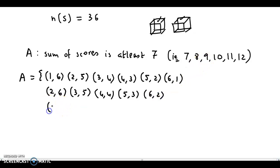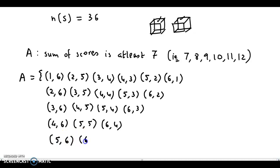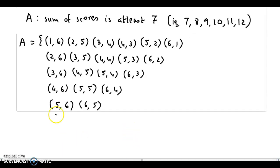For sum 10: (4,6), (5,5), (6,4) — that's 3 outcomes. For sum 11: (5,6), (6,5) — that's 2 outcomes. And finally for sum 12: (6,6) — that's 1 outcome. Counting all favorable outcomes, we get 21 total outcomes in favor.